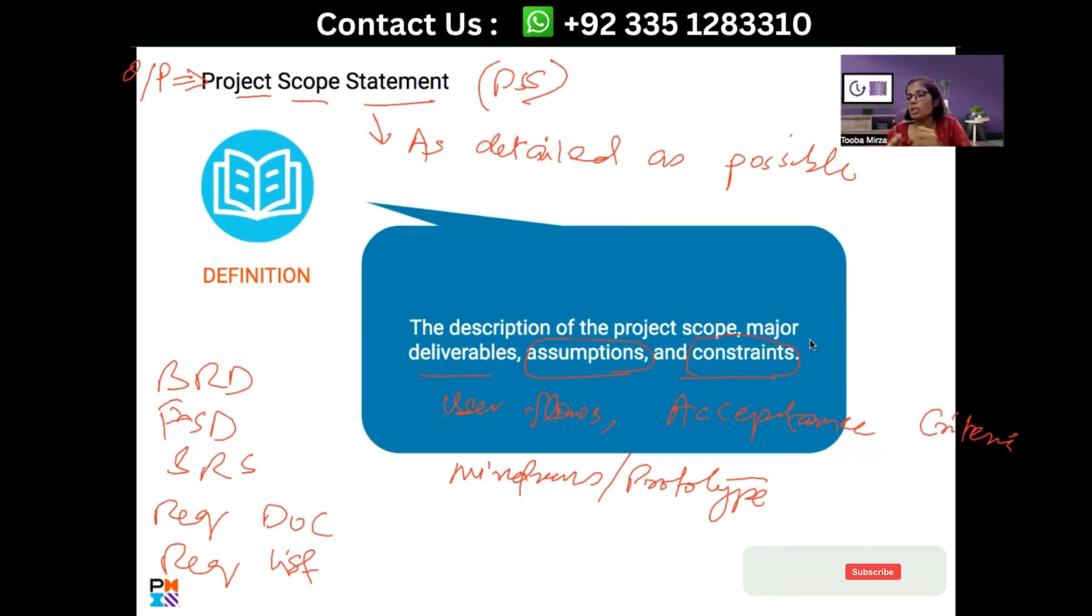So different project-based, deliverable-based assumptions, constraints are documented in the scope statement. Who could tell me what is an assumption?